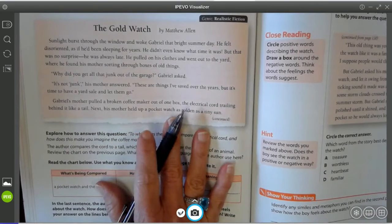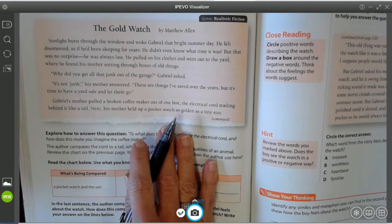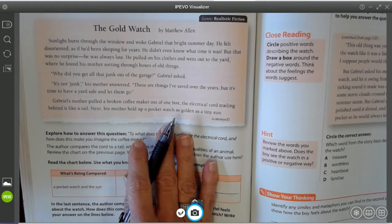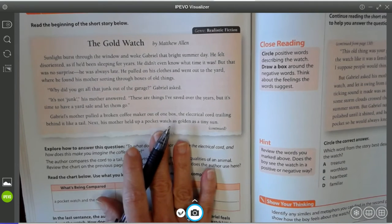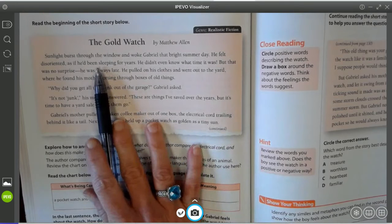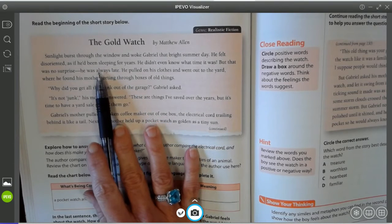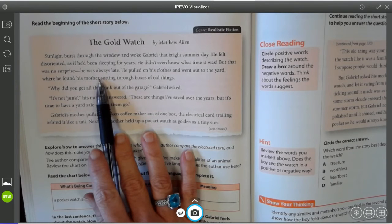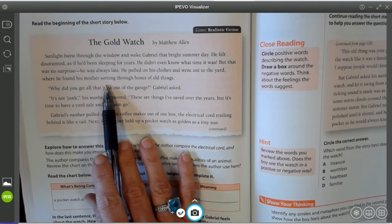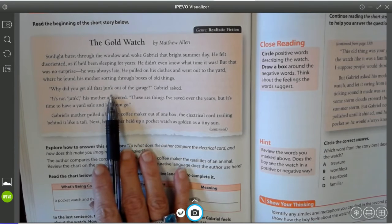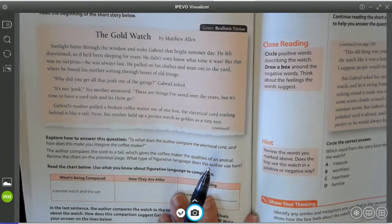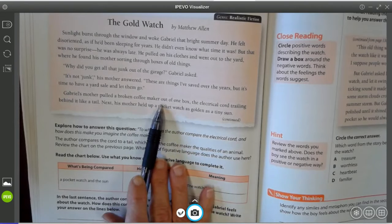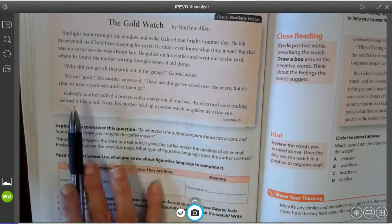All right. So let's take a look at the gold watch, this little story. And we're going to look for words that we can determine their connotative meaning. Or we can determine what they mean by the figurative language that's being used. Okay. The Gold Watch by Matthew Allen. Sunlight burst through the window and woke Gabriel that bright summer day. He felt disoriented as if he had been sleeping for years. He didn't even know what time it was. But that was no surprise. He was always late. He pulled on his clothes and he went out into the yard where he found his mother sorting through boxes of old things. Why'd you get all that junk out of the garage? Gabriel asked. It's not junk, his mother answered. These are things I've saved over the years. But it's time to have a yard sale and let some things go. Gabriel's mother pulled a broken coffee maker out of the box. The electrical cord trailing behind it like a tail.